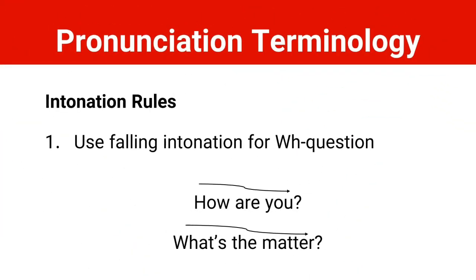We have certain rules for intonation. Rule number one: we use falling intonation for WH questions, meaning our voice goes down. For example: 'How are you?' Some other examples are: 'What's your name?' and 'How are you today?'